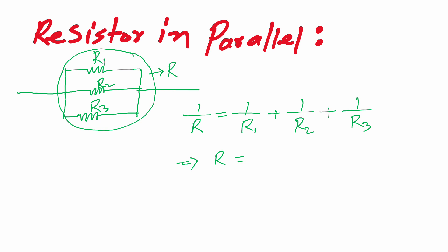Or R is equal to R1 times R2 times R3 divided by R1 plus R2 plus R3. Suppose this is equation 2.